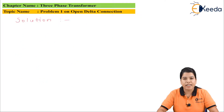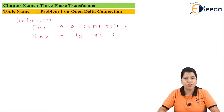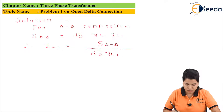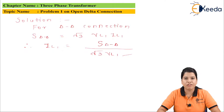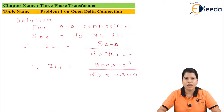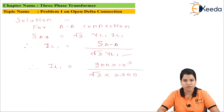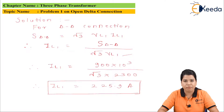When the load is connected in delta-delta, the kVA rating is given by S(delta-delta) = √3 · VL1 · IL1. Rearranging, IL1 = S(delta-delta) / (√3 · VL1). Substituting the values: IL1 = (900 × 10³) / (√3 × 2300), which gives IL1 = 225.9 amperes.